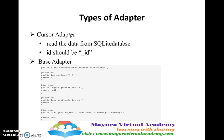Along with this, for all these adapters — cursor adapter, simple cursor adapter, or array adapter — the base class is the base adapter provided by Android. Other than these three, if we need any custom type of adapter, we can create our own by extending the base adapter provided by the Android system. It has many inbuilt methods, and according to the requirement, we can override the methods present in the base adapter and manage and display the items accordingly.